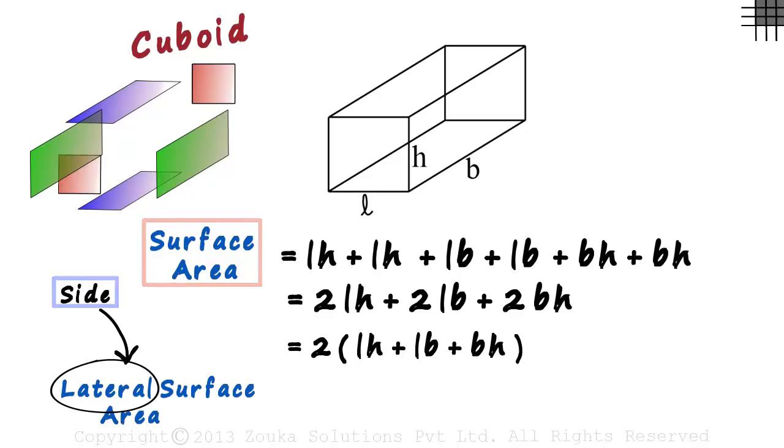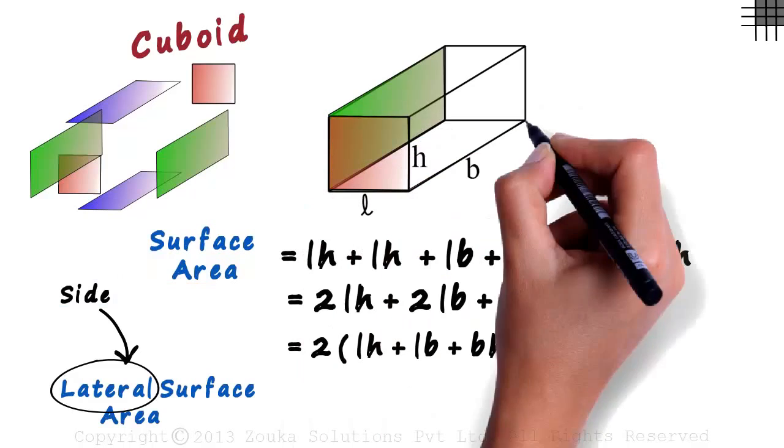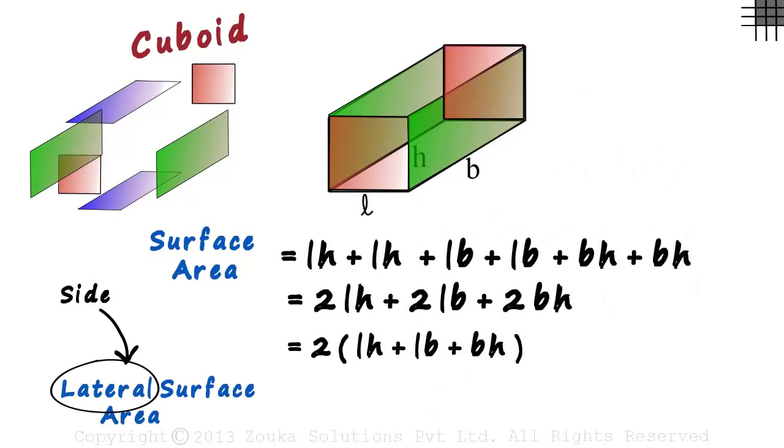There are four such rectangles: this one, this one, this one, and the one at the back. In terms of surface area, you can also look at lateral as everything except the top and the bottom. The two green and the two red rectangles make up the lateral surface.